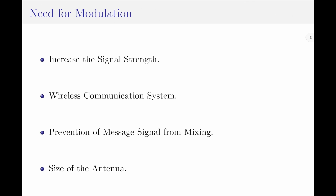The third point says prevention of message signals from mixing. It has been proven that modulation and its types prevent the interference of message signals from one another. If modulation is not used, it is highly likely that modulating signals interfere with one another, thereby causing errors in communication. By using modulation techniques, we can avoid this interference, and modulation ensures that the signals received by the receiver are entirely perfect.